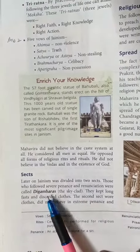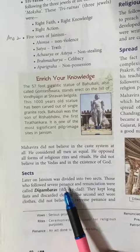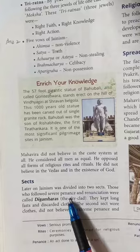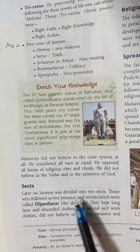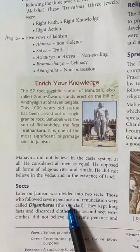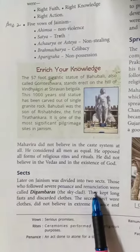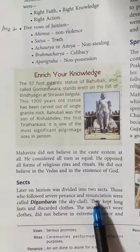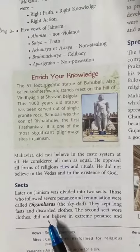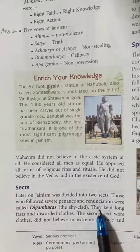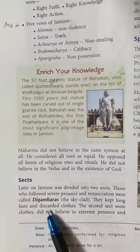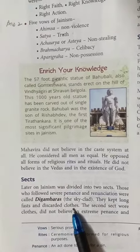One was the Digamaras, who followed the severe penance and renunciation. Penance is an act done to atone for a sin, and renunciation is giving up all the worldly pleasures. These Digamaras were the people who used to keep long fasts and they discarded the clothes.